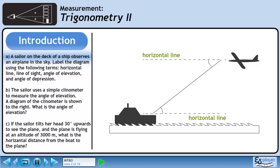The horizontal lines are the dashed lines. The line of sight is a solid line. The angle of elevation is the angle the sailor has to look up to see the plane. The angle of depression is the angle the pilot has to look down to see the boat.